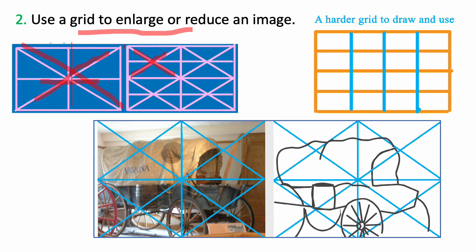Then you put that grid over your original and your new drawing paper. And then you, for example, copy this part of the image to the corresponding part on the grid.